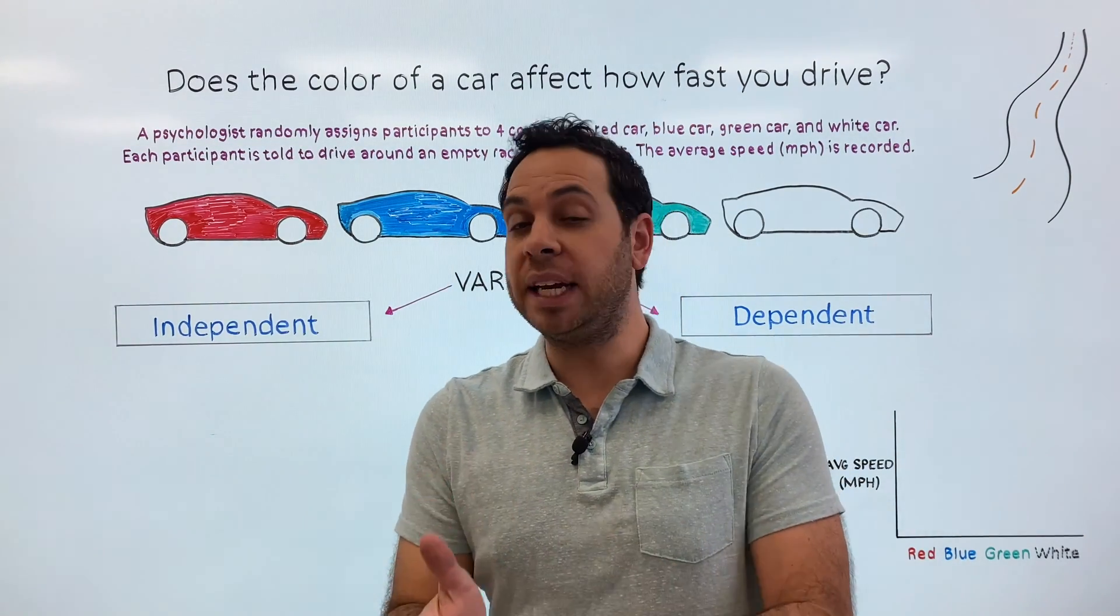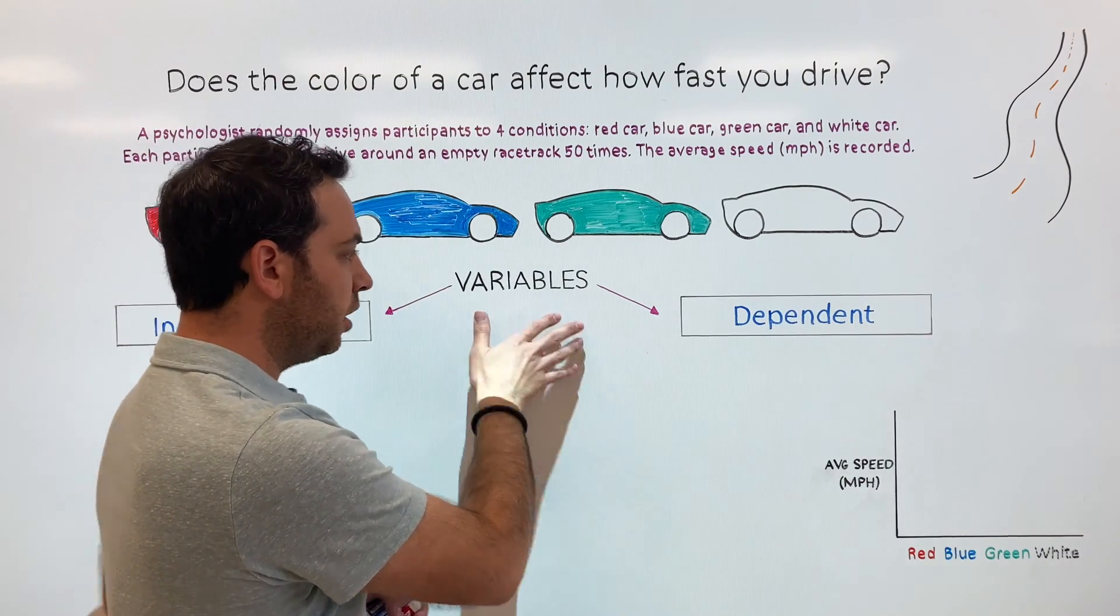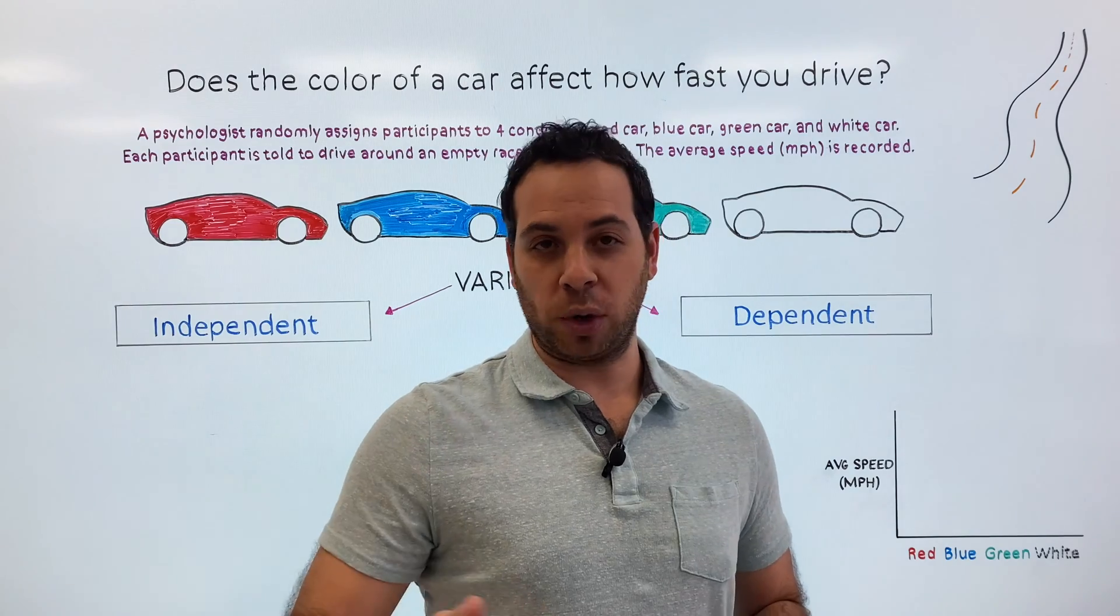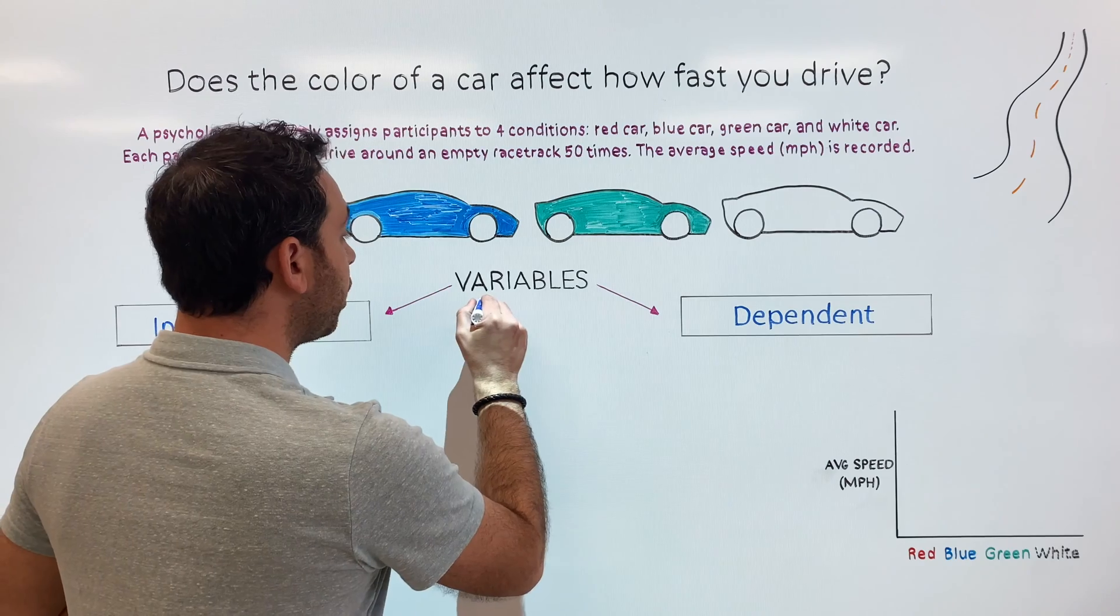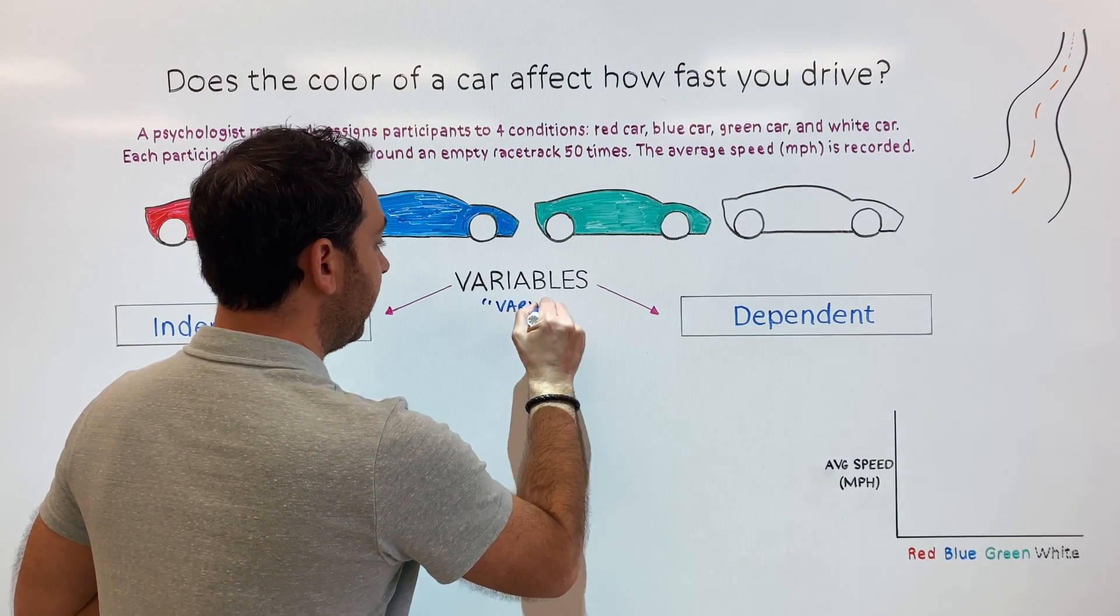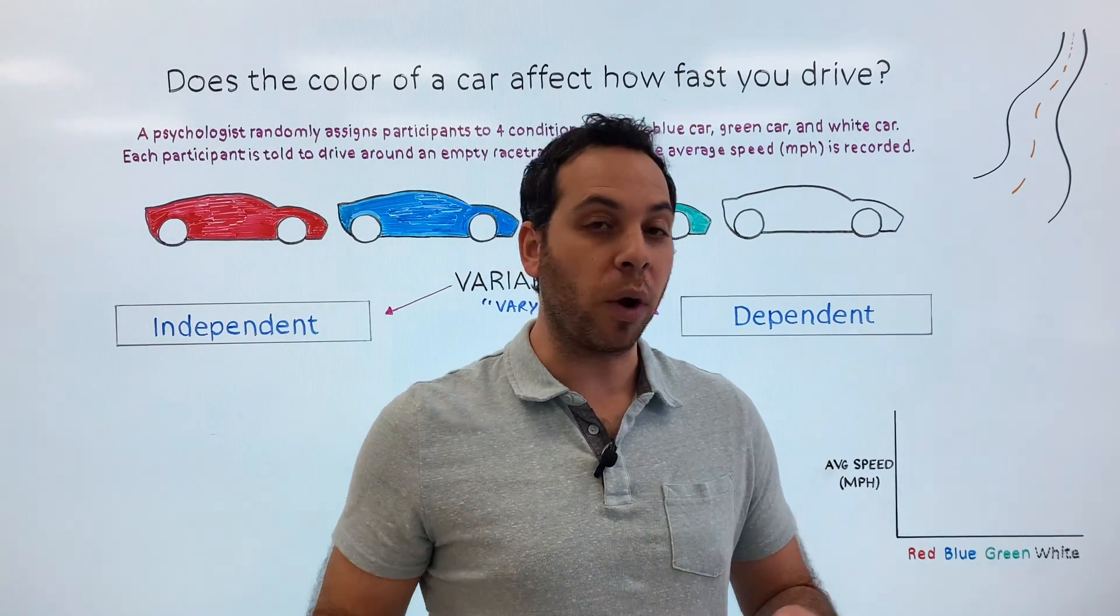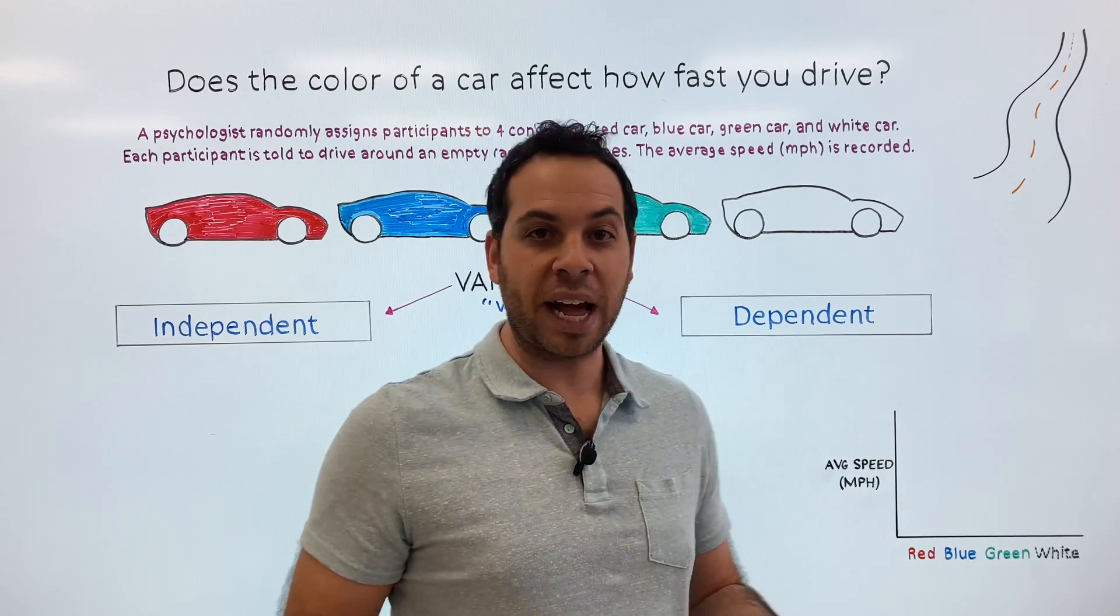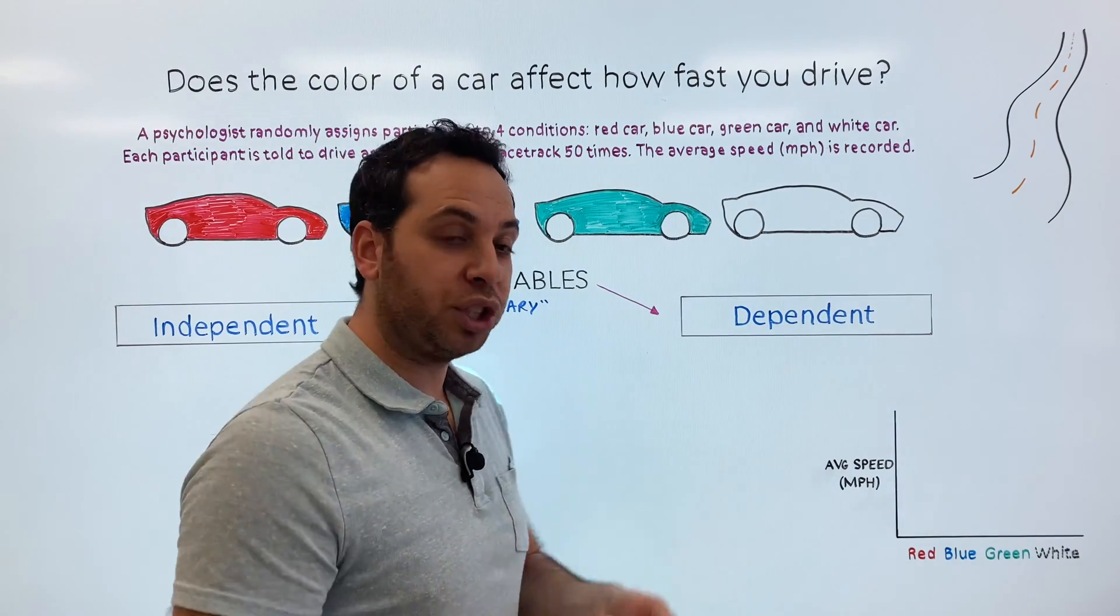Now to identify the independent and dependent variable, let's first understand what we mean by variables. This is a term we hear in biology and physics and chemistry and of course psychology. But what does it actually mean? The reason we use the word variable is because there are things within a study that can vary. Vary meaning change, right? Think about your life. Your mood can vary - one day you're happy, one day you're sad. The weather can vary. One day it's cold, one day it's hot. And what we want to know in a study is what are the things that have the potential to vary or change?